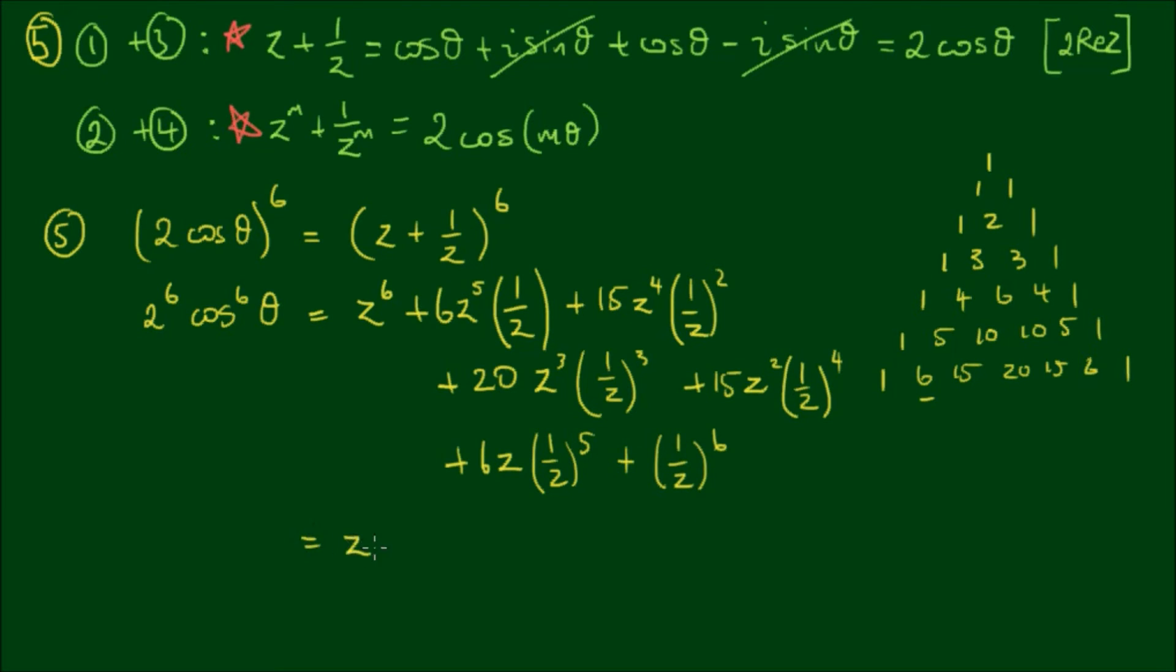So we have z to the 6 plus 6. These powers can cancel. So we have 6 by z to the 4th plus 15 by z to the 2nd power plus 20 plus 15 by 1 on z squared plus 6 by 1 on z to the 4th plus 1 on z to the 6th.